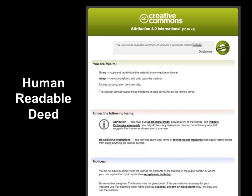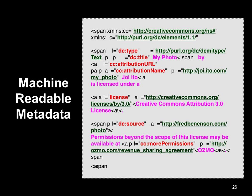On top of that, because most people are not lawyers, we have a human readable deed — a summary of the most important terms and conditions in language that normal human beings can understand. And then the last layer, one of the most important for the Internet age, is our machine-readable metadata — a simple snippet of HTML code that summarizes the license into language that search engines can understand. This is what Google Advanced Search uses to find CC licensed content on the web.